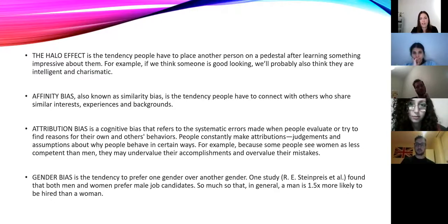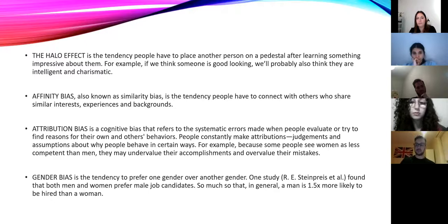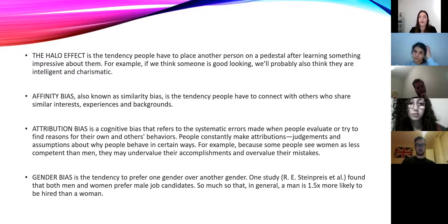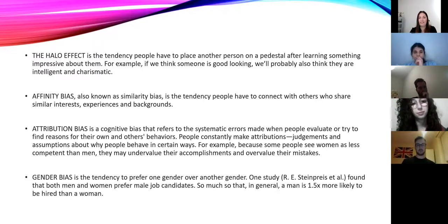Attribution bias is a cognitive bias that refers to systematic errors we make when we evaluate or try to find reasons for other people's behaviors. We constantly make judgments and assumptions about why people behave in certain ways. For example, because some people see women as less competent than men, they undervalue their accomplishments or overvalue their mistakes.